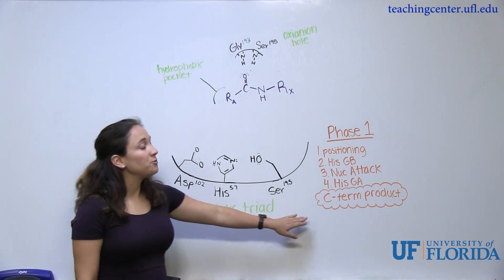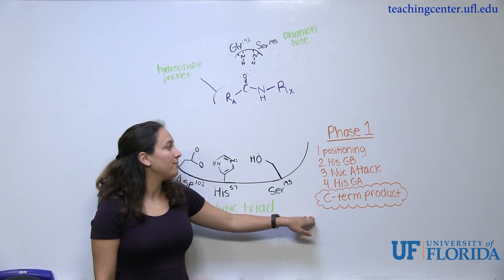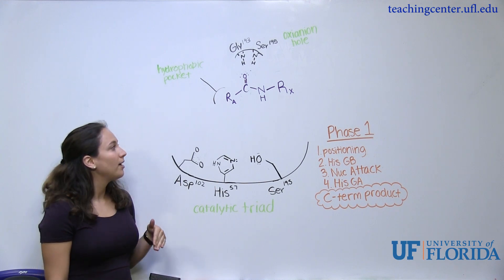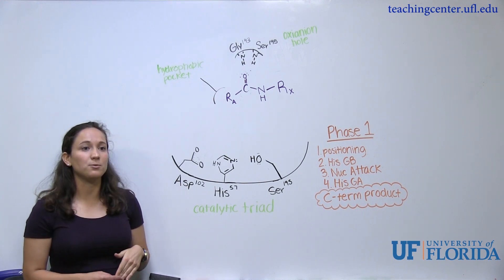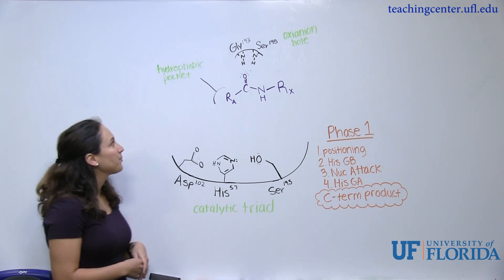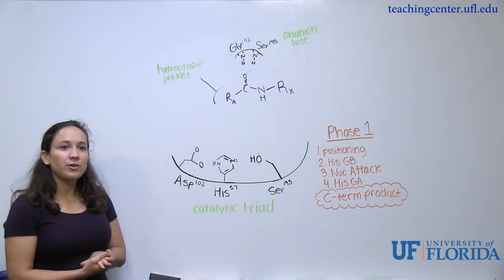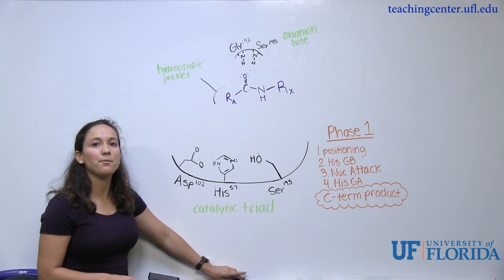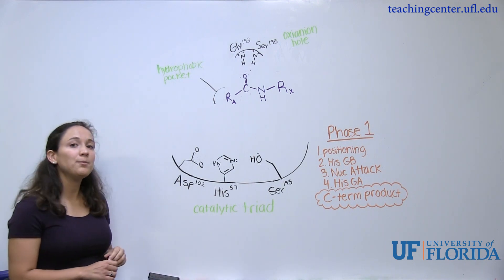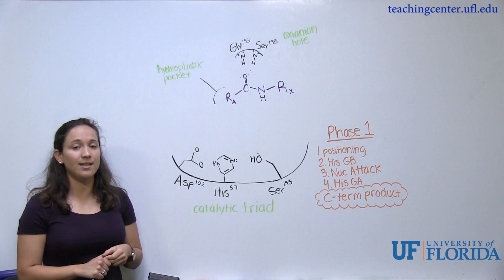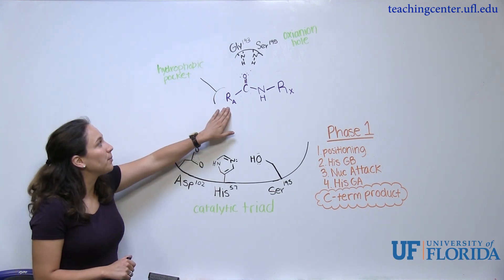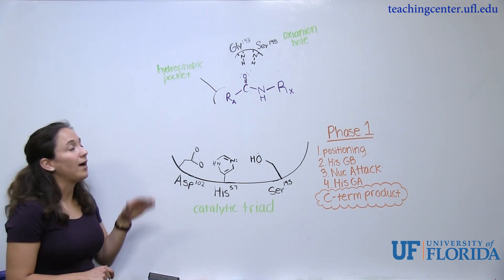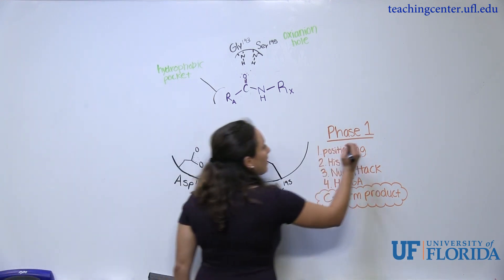On the side I've written which phase we're in and all the steps in each phase, so as we go along I'm going to check off each step. Without further ado, let's start with the mechanism. The first step is the positioning step — putting the polypeptide chain into the active site of the enzyme, which is already done. You can see the purple polypeptide chain is already in there, with the aromatic residue placed into the hydrophobic pocket. We can go ahead and check that off.